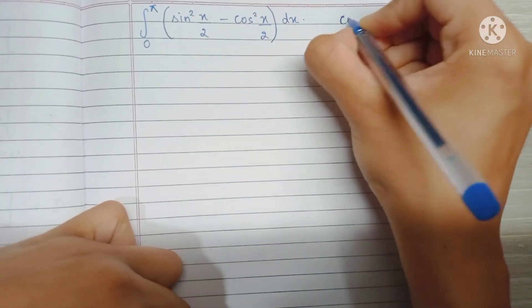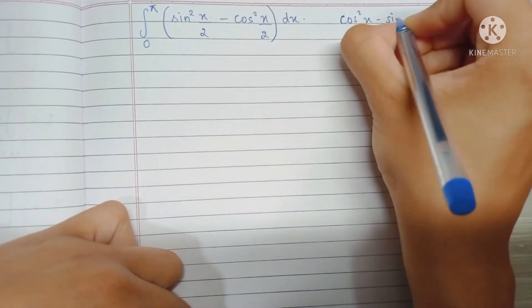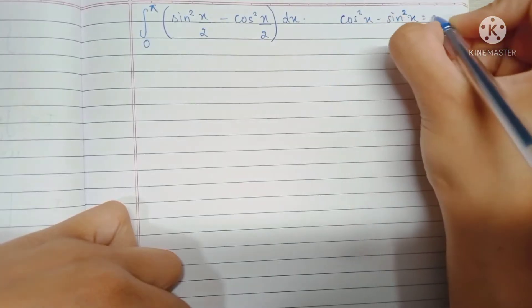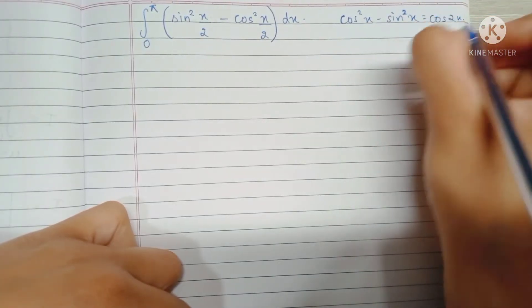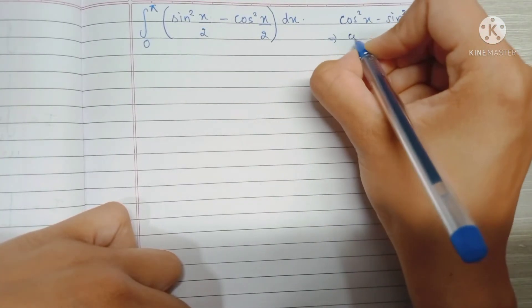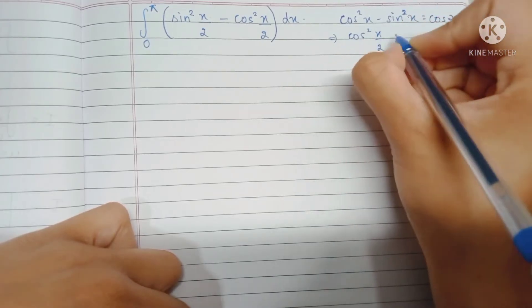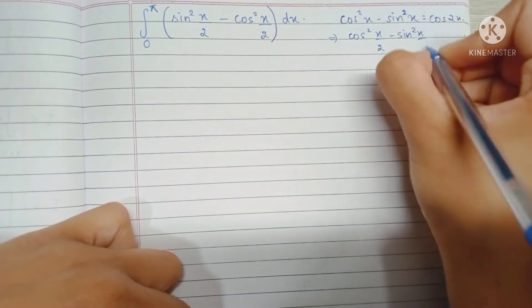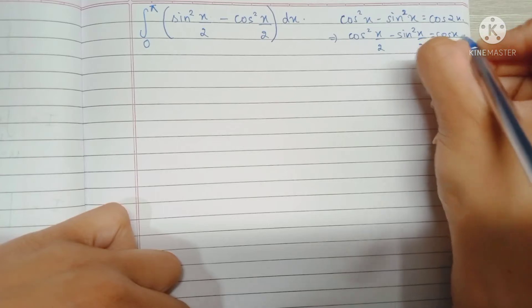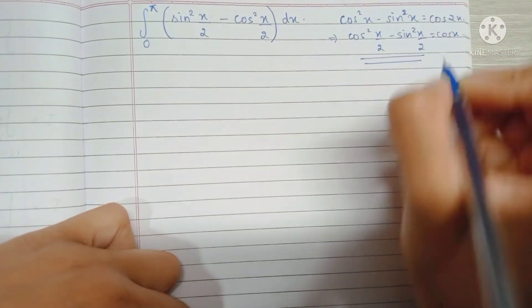First of all, we know that cos squared x minus sine squared x is equal to cos 2x. So this implies that cos squared x by 2 minus sine squared x by 2 is equal to cos x. This is called the half angle formula for cosine.